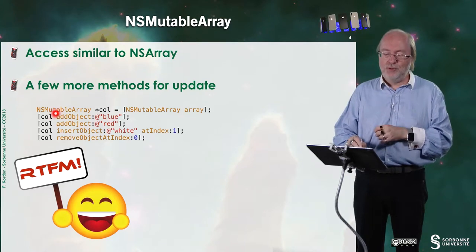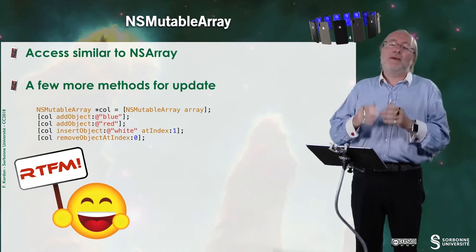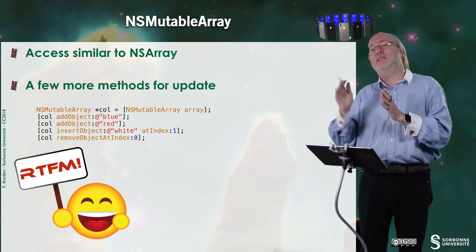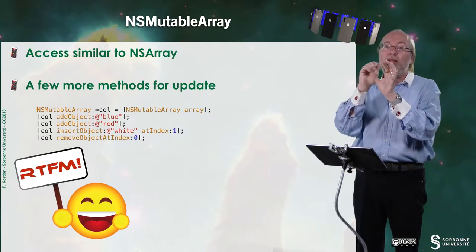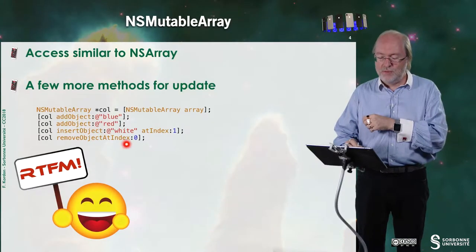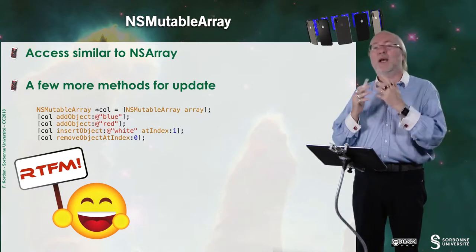And then I will use the method add object, add object blue, add object red. Okay? And by default, when I do add object, it's at the end of the array. But I can also say, insert object white, at index one. And then the object will be inserted at index one. And then all the objects will be pushed ahead. Of course, the index starts at zero. Okay? And I can here do remove object at index. And then I remove the first object. And I can also remove all objects, et cetera.